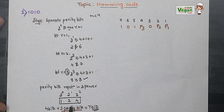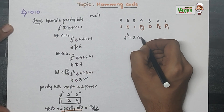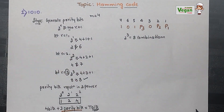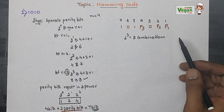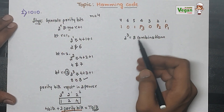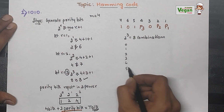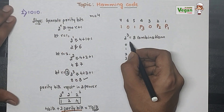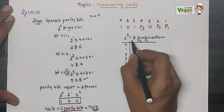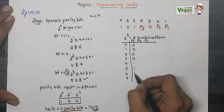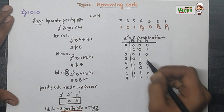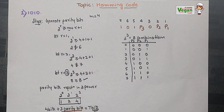Since we have 3 unknown parity bits, there are 2^3 = 8 possible combinations. We list combinations 0 through 7. Using the short trick from digital logic design, we write out all 8 combinations for p1, p2, and p3: p1 cycles as 0,1,0,1,0,1,0,1; p2 as 0,0,1,1,0,0,1,1; p3 as 0,0,0,0,1,1,1,1.